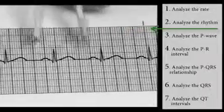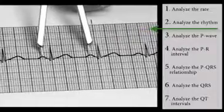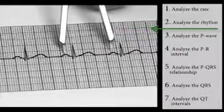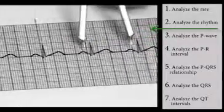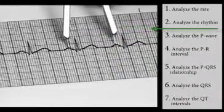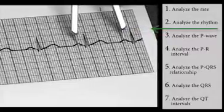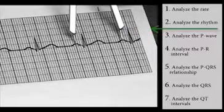First, find the atrial rate by locating two consecutive P waves. The distance between the P waves can be measured by calipers or by using a paper and pencil with a straight edge. If calipers can be moved across the strip from P wave to P wave without adjusting the calipers, the rhythm is regular.